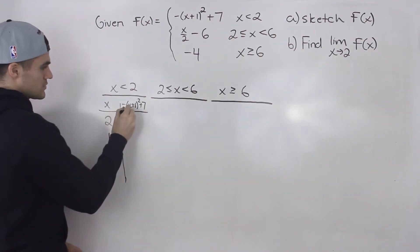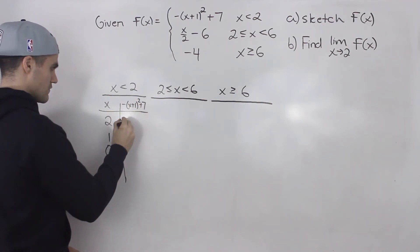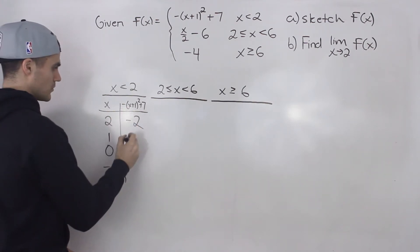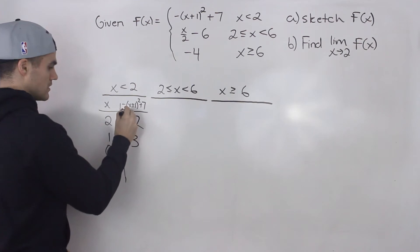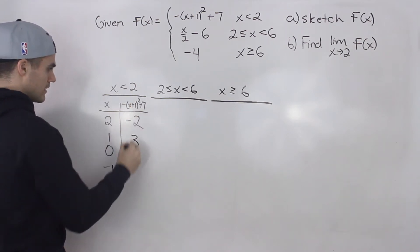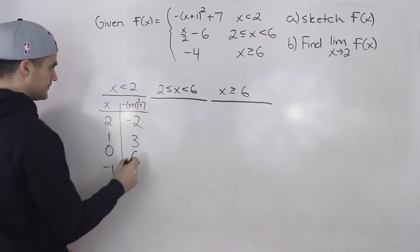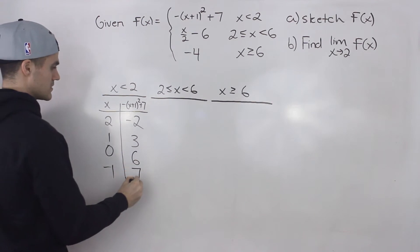So plugging in 2 here, 2 plus 1 is 3 squared is 9 times negative 1 is negative 9 plus 7 gives us negative 2. Then 1 plus 1 squared is 4, negative 4 plus 7 gives us positive 3. 0, 1, negative, that would give us 6. And then this would just be 7.